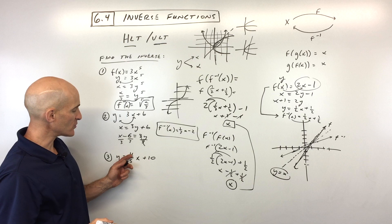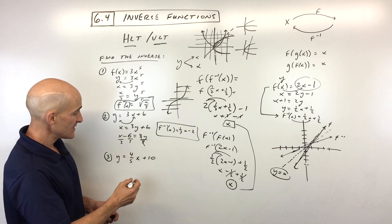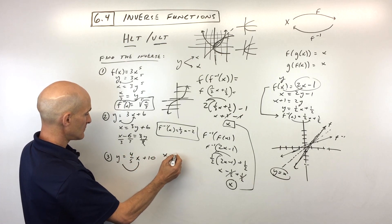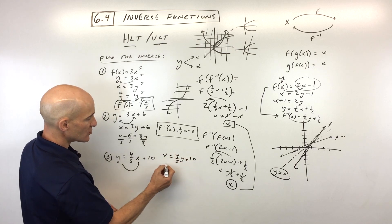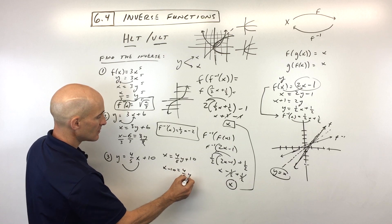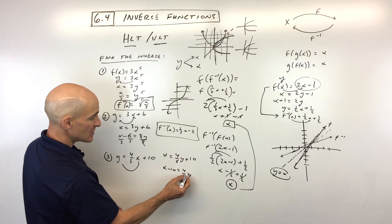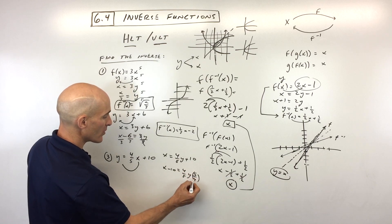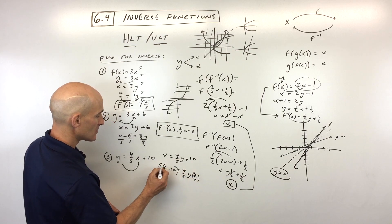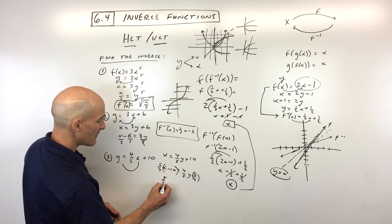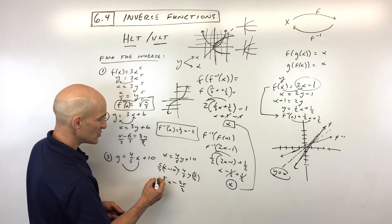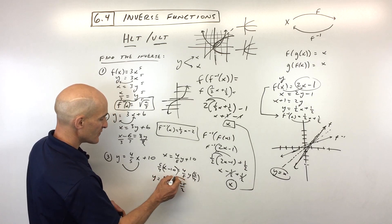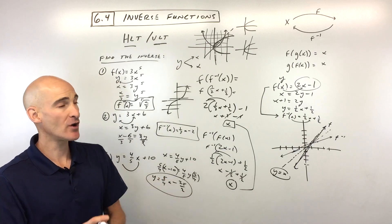Number three: y equals four-fifths x plus 10. Same process — switch the x and the y, then solve for the new y. Subtract 10 from both sides, then multiply both sides by the reciprocal, five-fourths, to get y by itself. Distributing gives five-fourths x minus 50/4, which is 25 over 2. That's your inverse function. The key is: switch the x and the y, then solve for the new y.